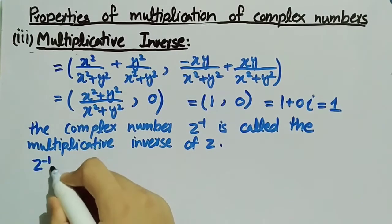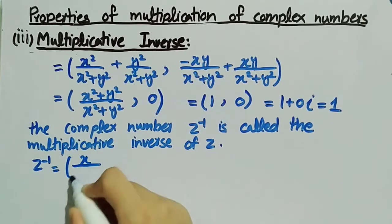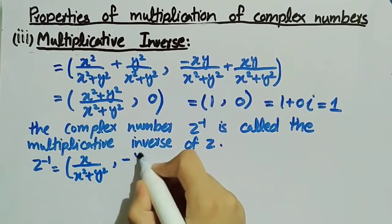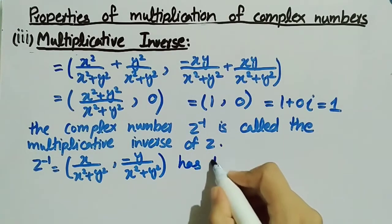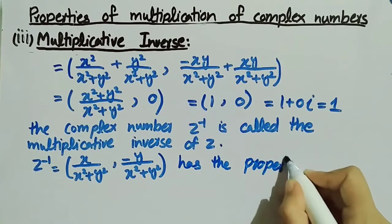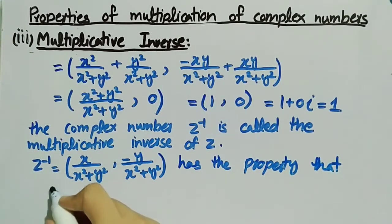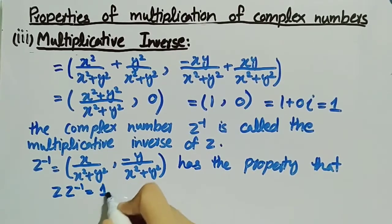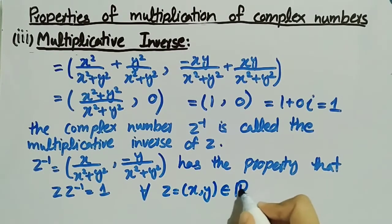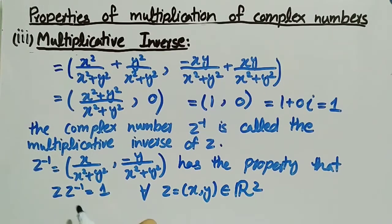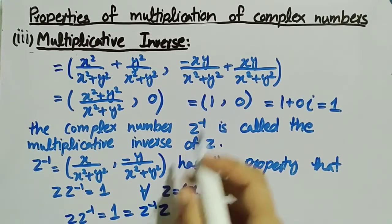Thus the complex number z⁻¹, equal to (x/(x² + y²), −y/(x² + y²)), has the property that z · z⁻¹ = 1 for all z = (x, y) belonging to R2. So z⁻¹ is the multiplicative inverse of complex numbers. In the same way you can prove that z⁻¹ · z = 1 by following the same steps.